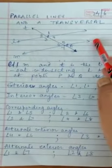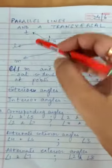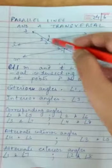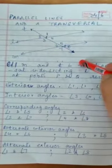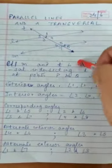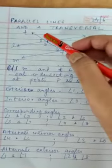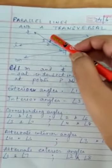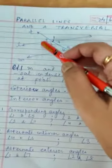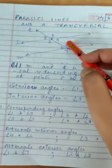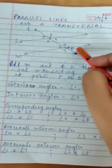L and M are two parallel lines and T is a transversal. We have given the name of these angles: 1, 2, 3, 4, 5, 6, 7, 8.